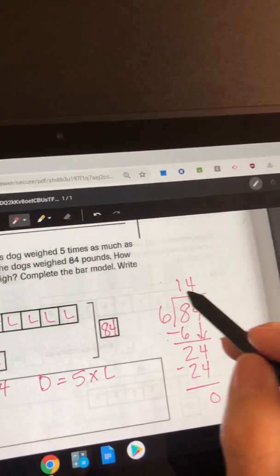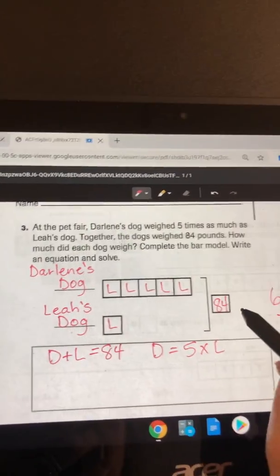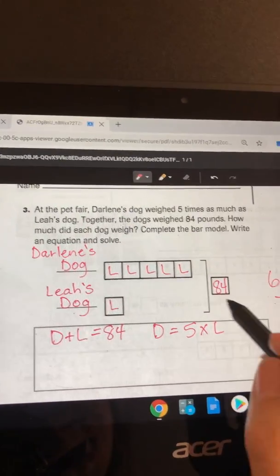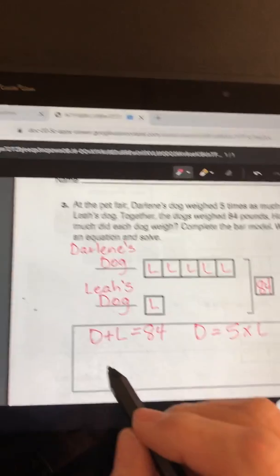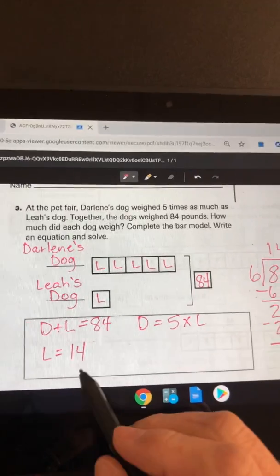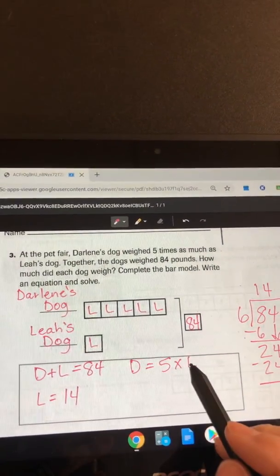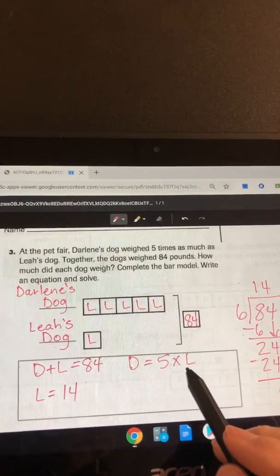So each one of these boxes is 14. So Leah's dog equals 14 pounds. And then you're just gonna plug in that 14 here and plug in that 14 here.